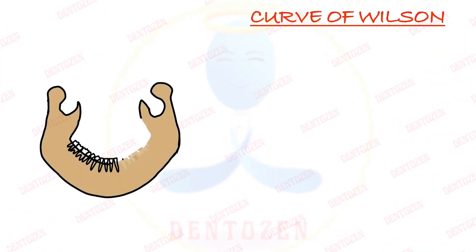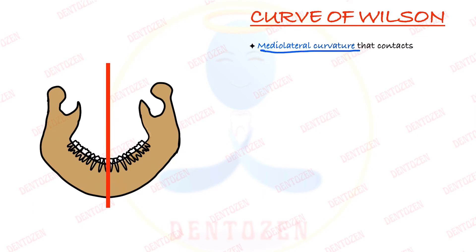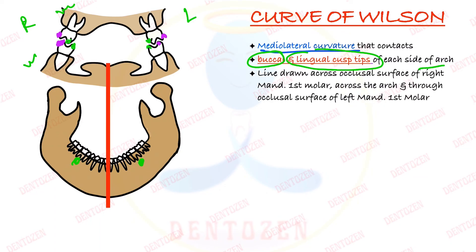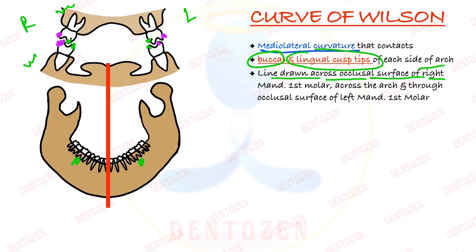Now let's see the second curve, the curve of Wilson — it is the mediolateral curve. Looking at the molar region of both maxillary and mandibular arches from the front, we can see both maxillary and mandibular first molars on left and right sides. If we look at the buccal and lingual cusp tips on each side, and draw a line through the occlusal surface of the right mandibular first molar passing across the arch through the left mandibular first molar, we get the curve of Wilson — passing through buccal and lingual cusp tips on both sides.